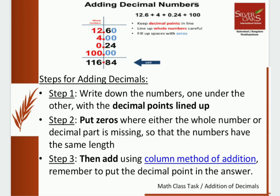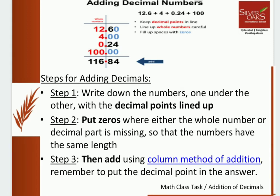Steps for adding decimals. Step 1: Write down the numbers one under the other with the decimal points lined up. Step 2: Put zeros where either the whole number or the decimal part is missing so that the numbers have the same length. Step 3: Then add using the column method of addition. Remember to put the decimal point in the answer.